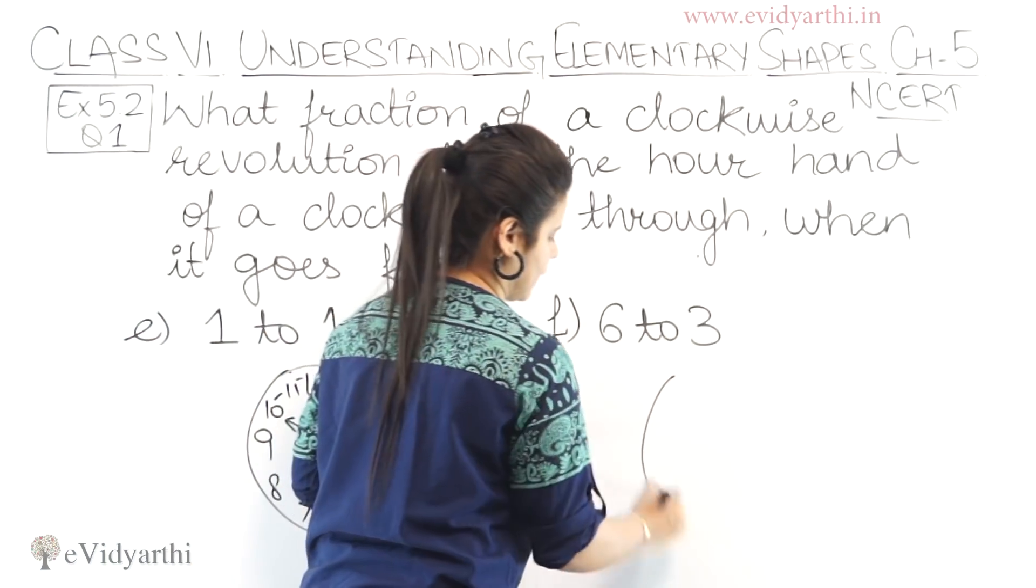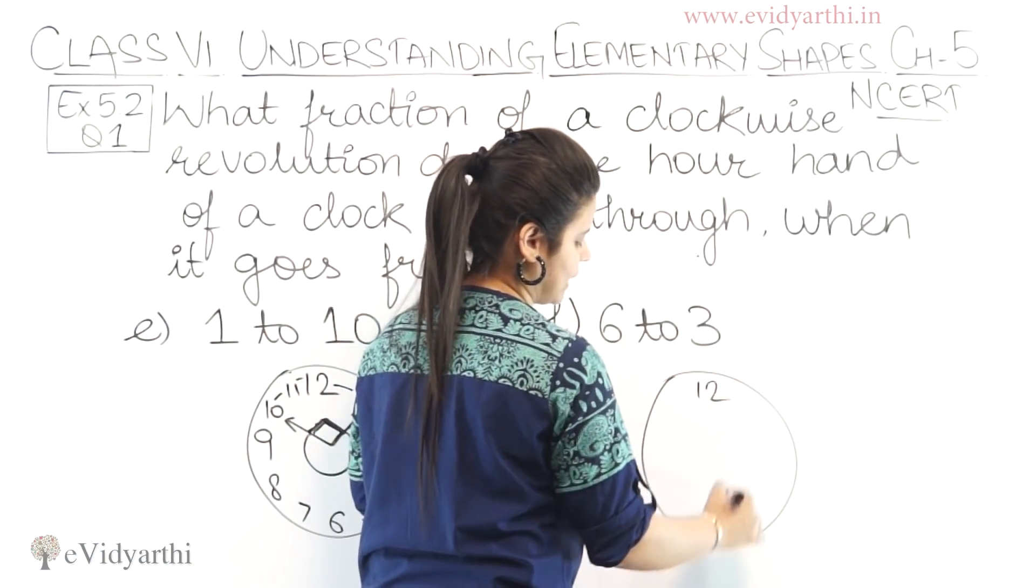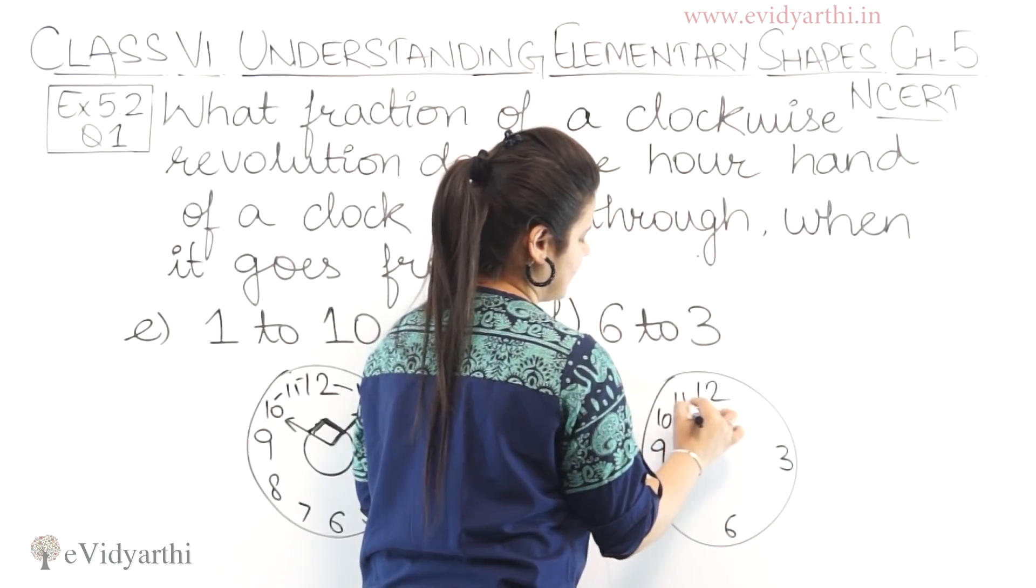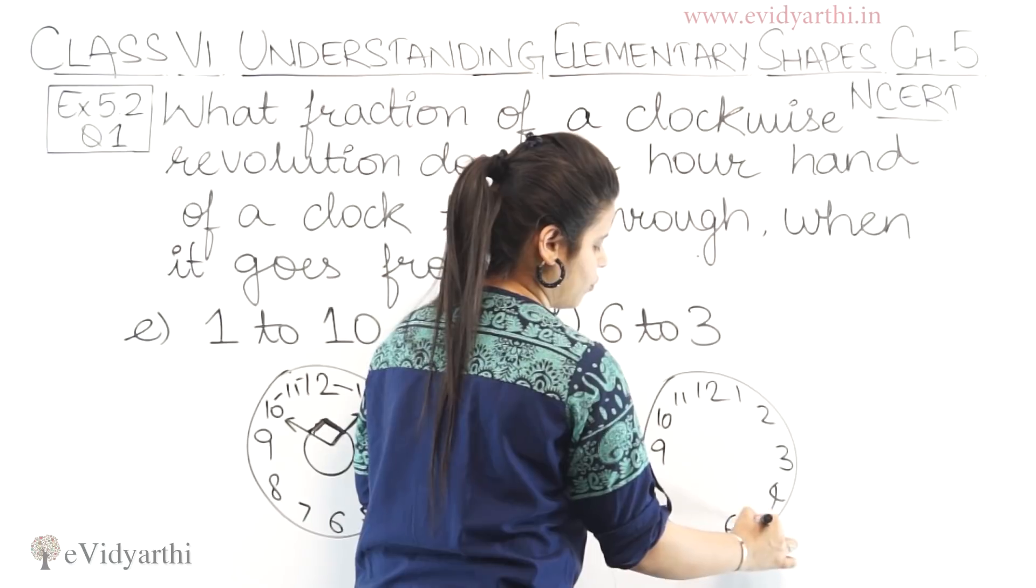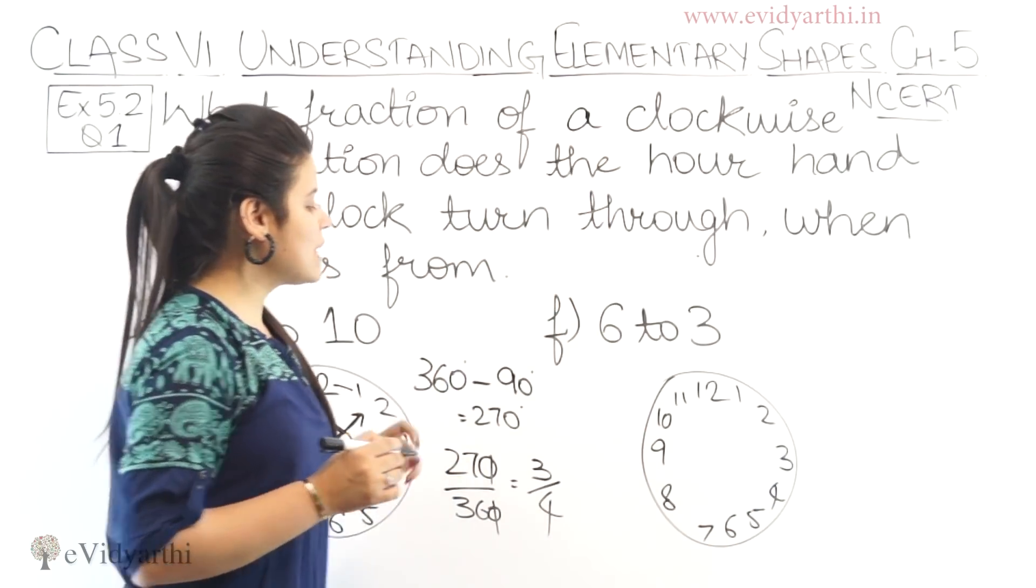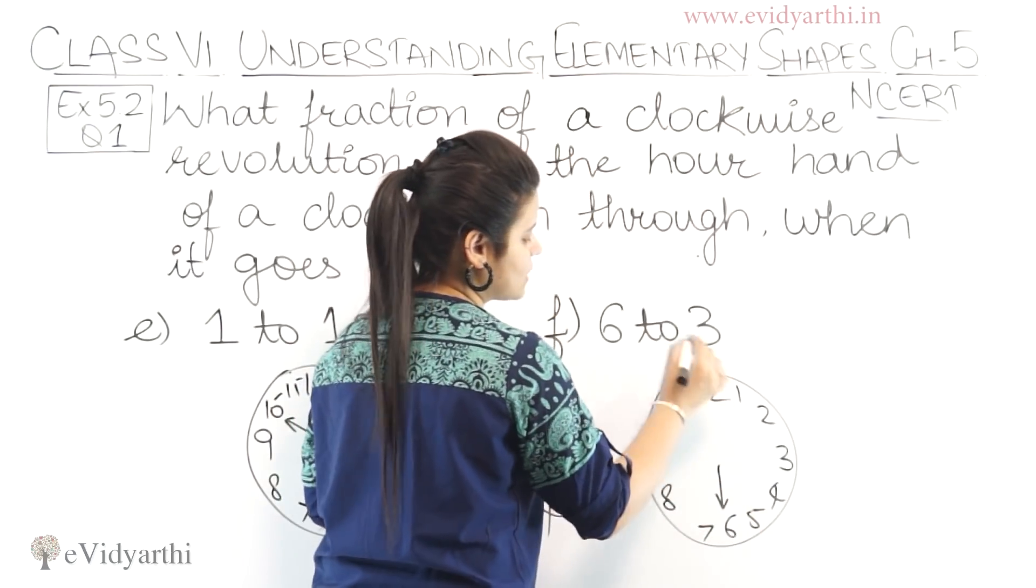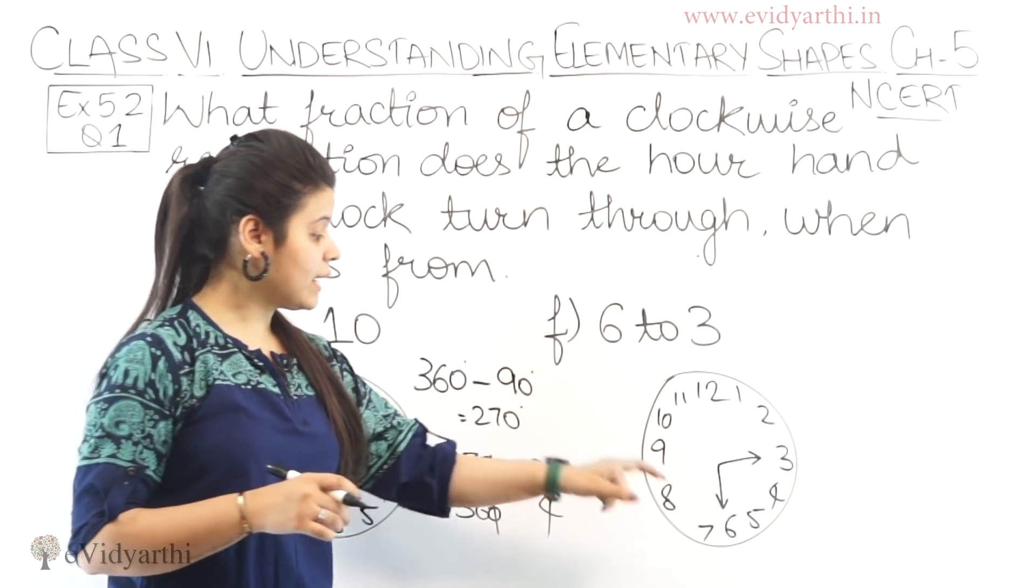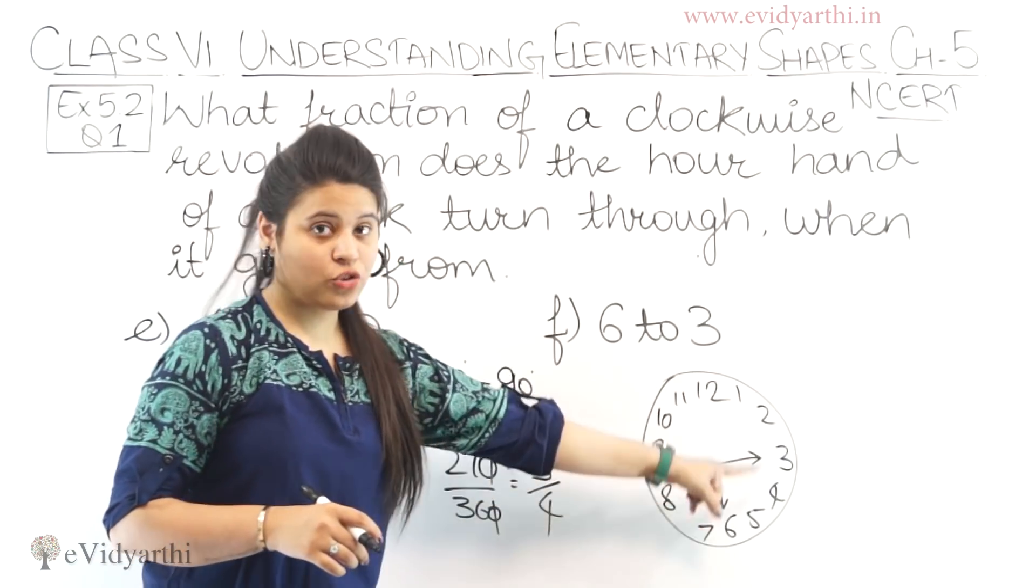Six to three. Again, this is our clock. Twelve, six, three, nine, ten, eleven, one, two, four, five, seven, eight. Right? Now, six is here. Then, six to three. It's at three again. Again the same thing will happen. Six to three. Matlab six to seven, eight, nine, ten, eleven, twelve, one, two, three. Matlab it's the whole angle.